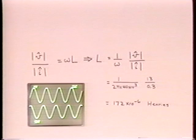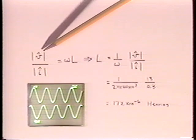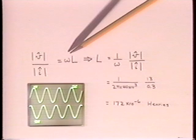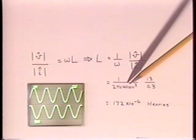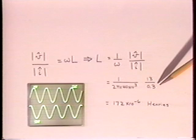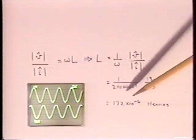The frequency is high enough that the ratio of the peak voltage, the lower trace, to the peak current, is the inductive reactance. At a frequency of 40 kilohertz, a voltage of 13 volts peak gives 0.3 amps peak. So the measured inductance is 172 microhenries.